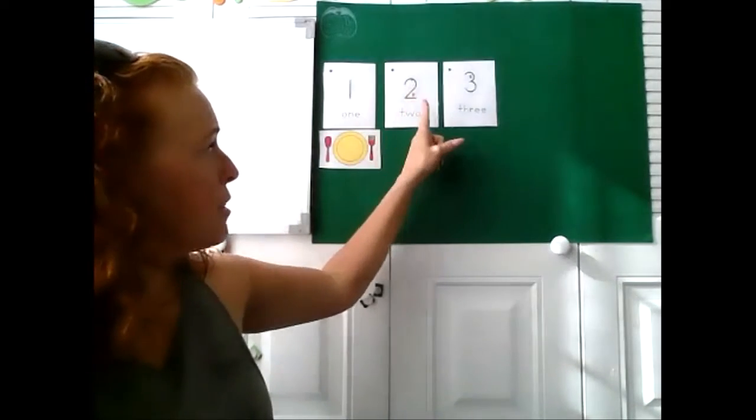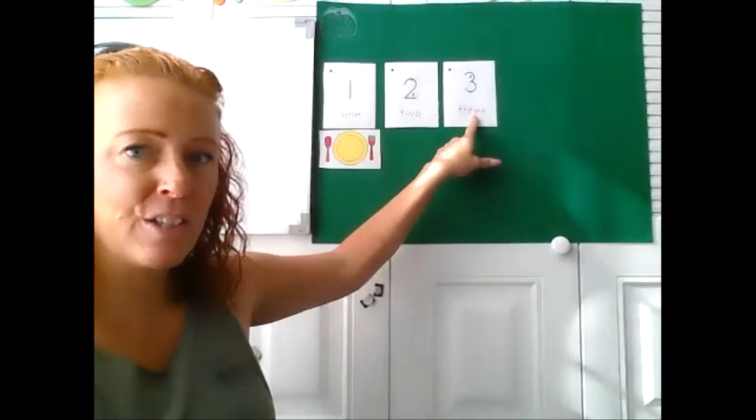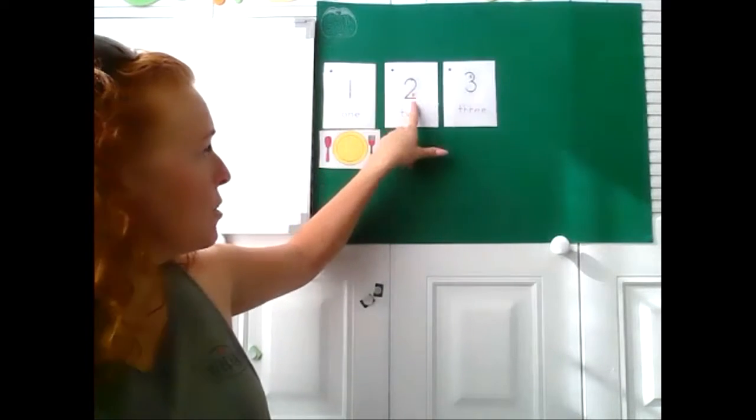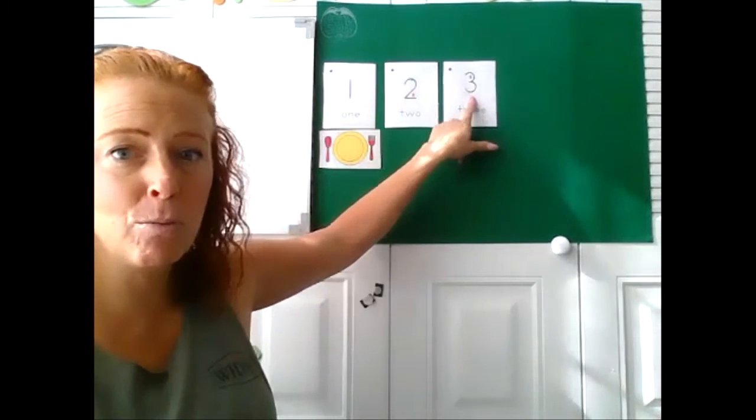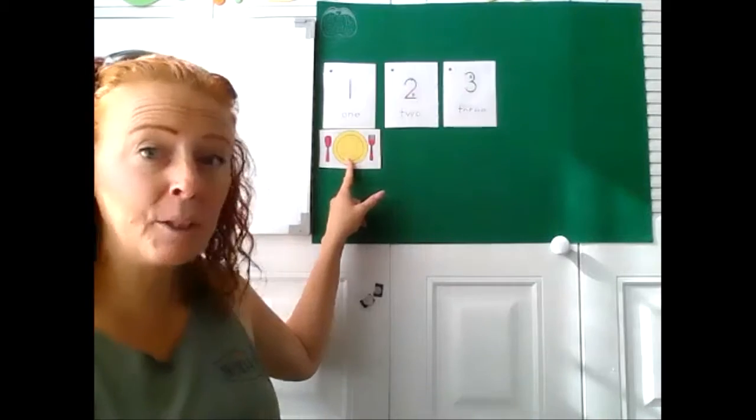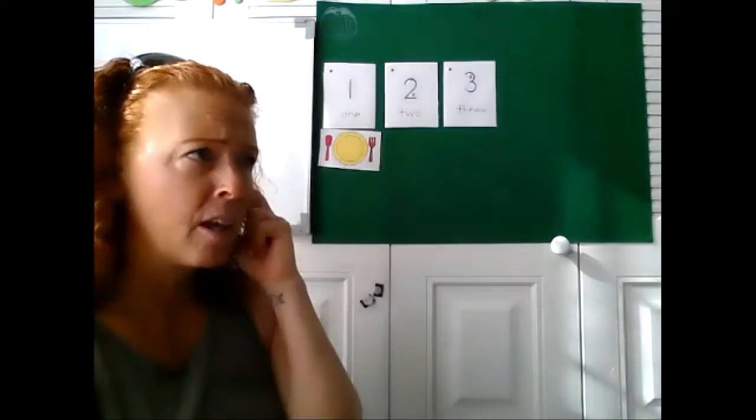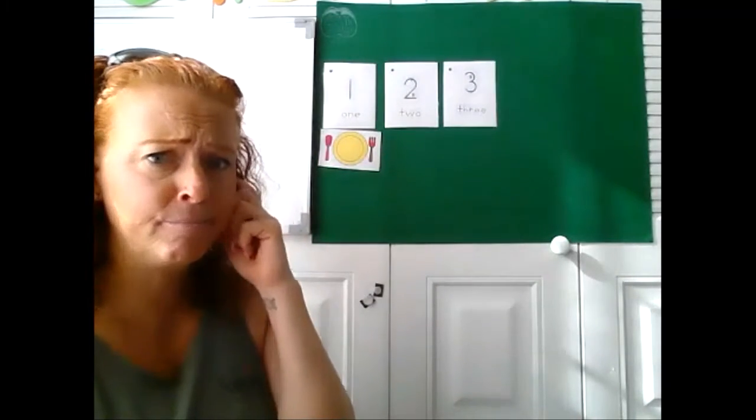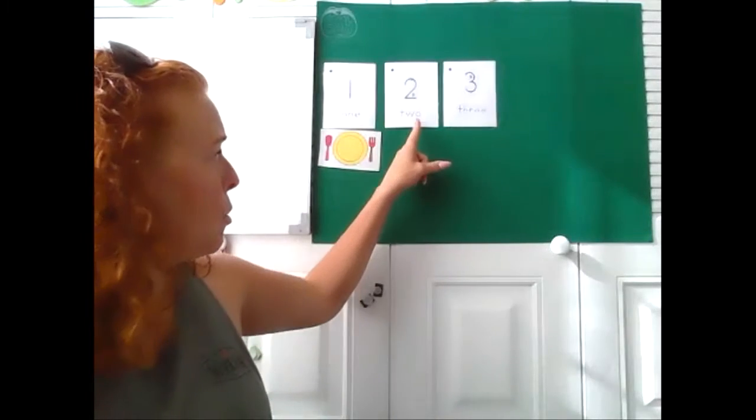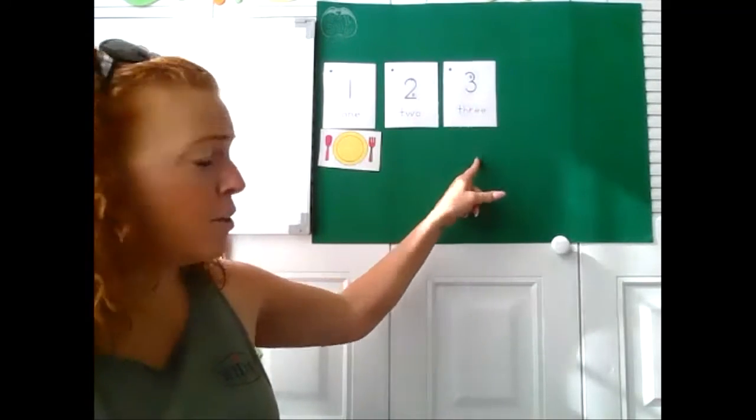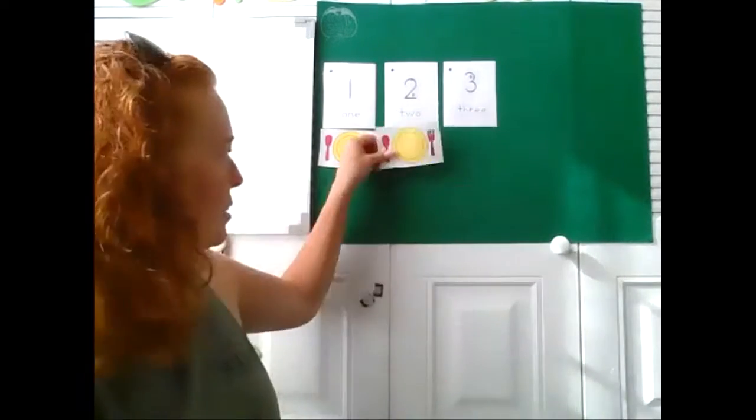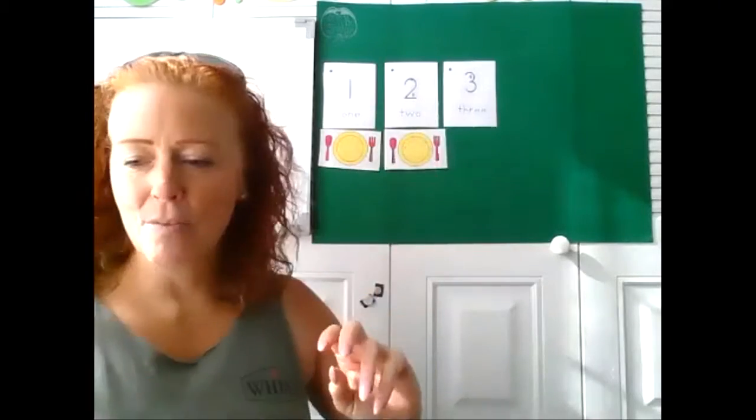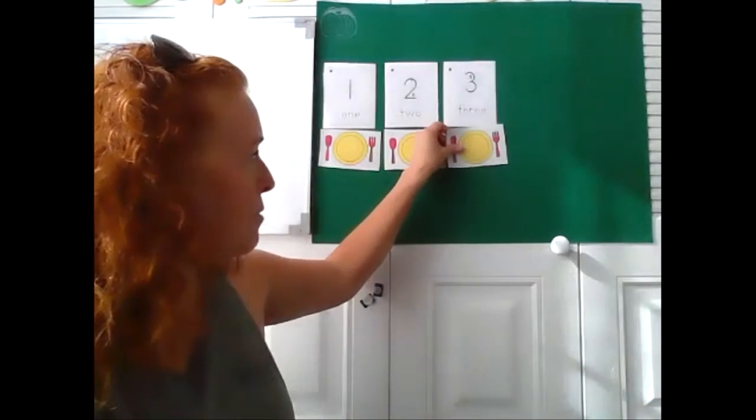So I have how many friends coming for dinner tonight? Let's count. One, two, three. There's my numeral three. We only have one place setting here. How many more do I need? Can we count? Let's see. One, two. Look at that. Now everybody has a place to have dinner.